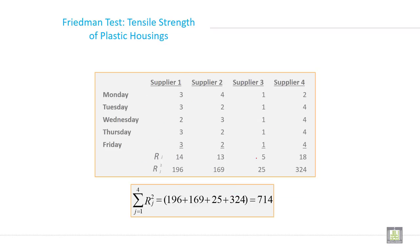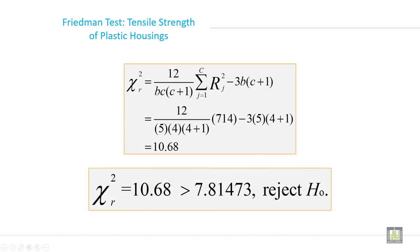So this is the data. Just calculate this chi-square value. So it is 714. Now put on the value and calculate using the formula, it will be 10.68.